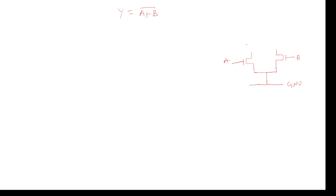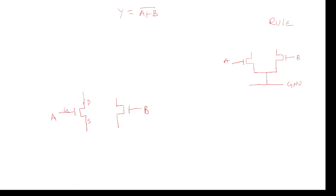The pull-up network also requires one more circuit element — an NMOS transistor. If it is addition, the rule is that the pull-down network should be in parallel; if it is multiplication, the pull-down network should be in series. Using that rule, I am designing the circuit here — this is transistor A and this is transistor B in the pull-down network.